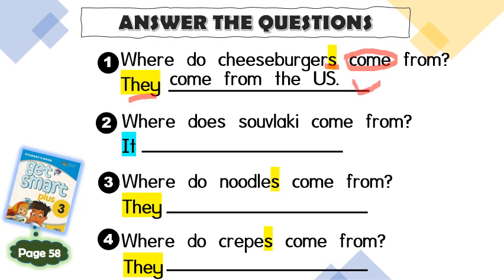What about the second one? Where does Souvlaki come from? Singular or plural? Singular, because there is no S here. So if singular, you use 'it', and then you have to add S after the verb. Your answer should be: it comes from Greece.